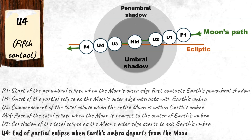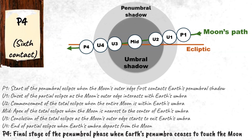Contact point U4, or the fifth contact, signifies the end of the partial eclipse when Earth's umbra completely leaves the Moon's surface. Contact point P4, or the sixth contact, is the final stage of the eclipse, marking the end of the penumbral phase when Earth's penumbra no longer touches the Moon. These stages provide a comprehensive view of the fascinating process of a lunar eclipse.